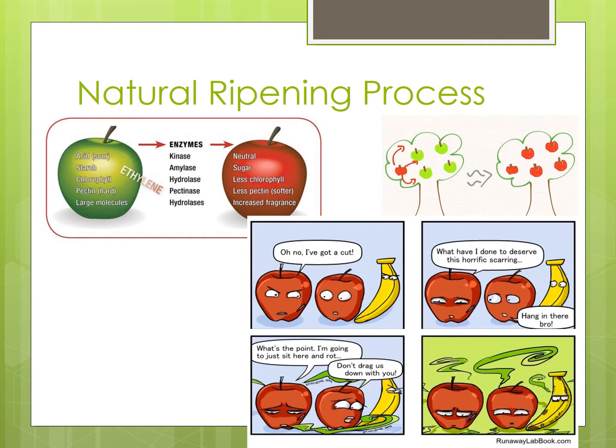As evident by this, ethylene production is a completely autocatalytic process. As entire orchards and fields of fruit encounter increased ethylene concentrations, the amount of ethylene increases exponentially.